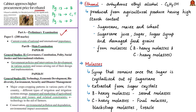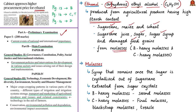Let's move to our first article on ethanol blending in petrol. Ethanol is also called anhydrous ethyl alcohol with the chemical formula C2H5OH. 'Anhydrous' means without water. Ethanol can be produced from agricultural produce having high starch content — for example, sugarcane, corn, maize, and wheat. Ethanol is also produced from sugarcane juice, sugar syrup, damaged food grains, and byproducts of the sugar industry such as molasses.